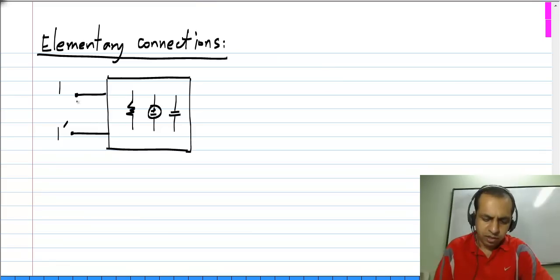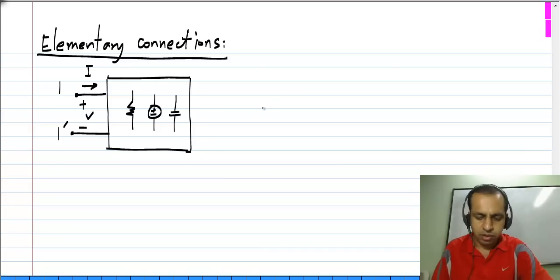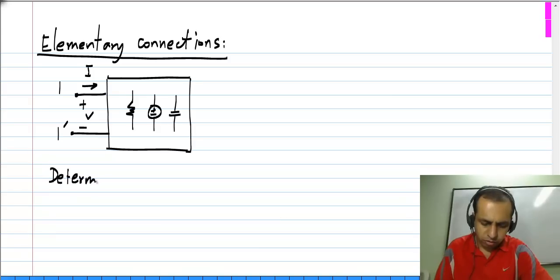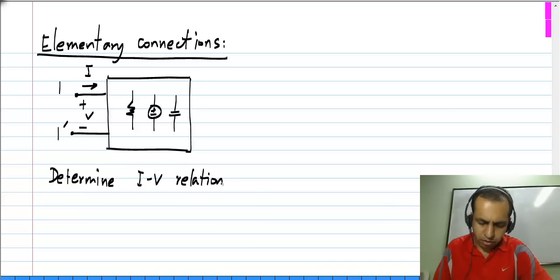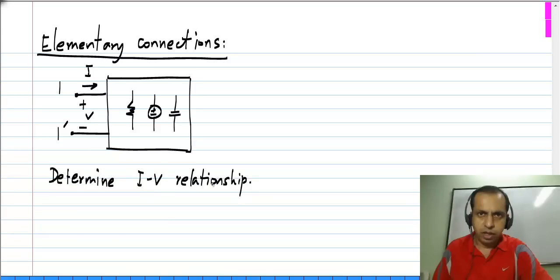To determine what the characteristics are, we have to find the relationship between the voltage across these two terminals and the current which goes into the terminal. So we need to determine the I-V relationship. This could be either by algebra or graphically — they are just equivalent descriptions of the same thing.